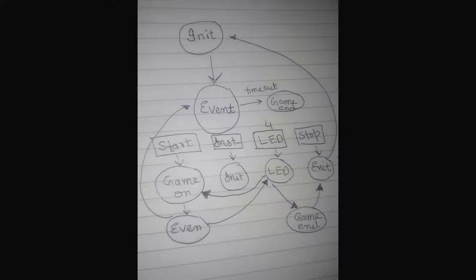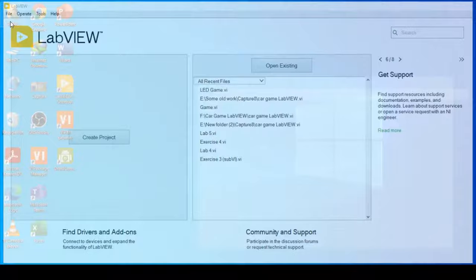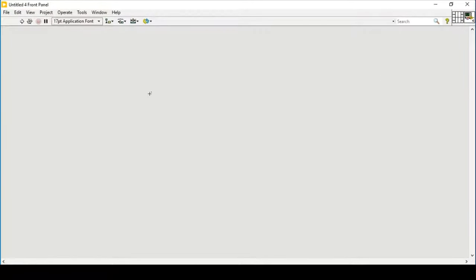We have three buttons — start, instructions, and stop — plus four LEDs, so we have four event structures for separate LEDs. If we press the start button it brings us to the Game On case, which brings us back to the event structure, which leads to the LED state function that checks the specific LED pressed.